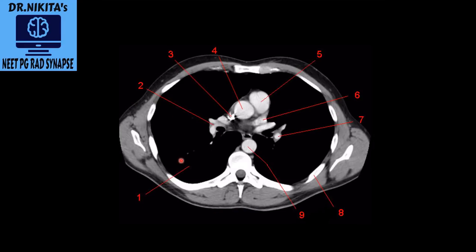Coming to the next section — again very important: number three is the SVC, number four is the aorta, number five is the main pulmonary trunk. You can see it dividing into two vessels. When you see any vessel dividing in the thorax like this, that is the pulmonary artery, as it divides into right and left. Being on the left side, that is the main pulmonary trunk — the inverted Y shape. Number six is the pulmonary vein, number seven is the left pulmonary artery, and number two is the right lung.